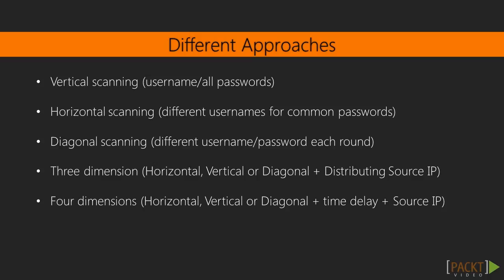Three-dimensional scanning is a combination of horizontal, vertical, or diagonal scanning, but in this case we have multiple machines or HTTP proxies that allow us to use different source IPs for each request. Finally, four-dimensional scanning adds a time delay per request on top of source IP rotation or distribution.